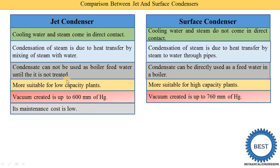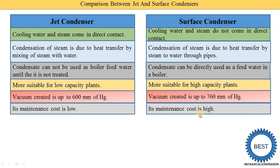In a jet condenser, the maintenance cost is low. In a surface condenser, the maintenance cost is high. The reason maintenance cost is high is because in a surface condenser there are a number of pipes, and fouling occurs — the pipes get fouled after some time. So we need to do proper cleaning of the pipes, which is why the maintenance cost is increased.